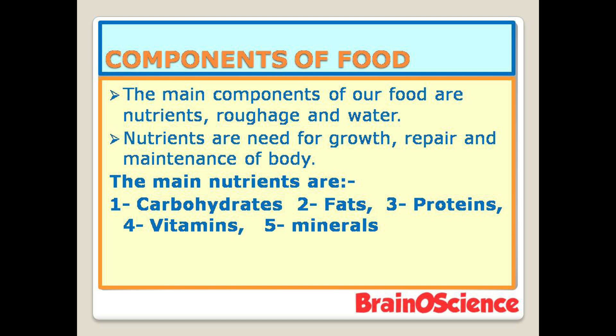The main components of food are nutrients, roughage, and water. Nutrients are needed for growth, repair, and maintenance of the body. Just as we learned in chapter one, food provides us energy and helps with growth, repair, and maintenance of our body. It is because of the nutrients present in food that our body's growth and repair takes place.